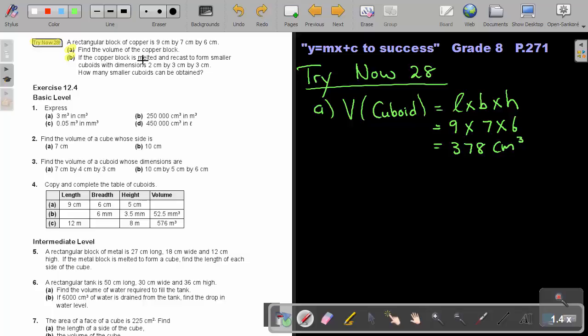Now, if the copper block is melted and recast to form smaller cuboids, it's smaller cuboids, not cubes, cuboids with dimensions 2 by 3 by 3. How many smaller cuboids can be obtained?